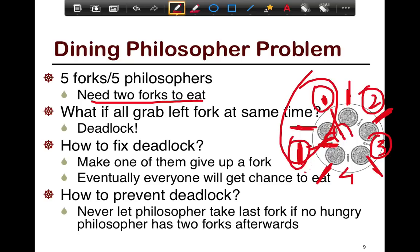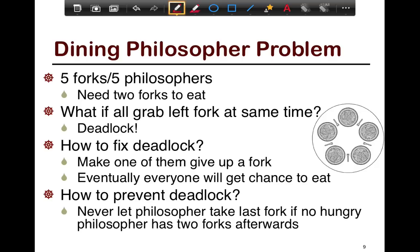Another way of preventing deadlock is to never let a philosopher take the last fork if no hungry philosopher would have two forks afterwards. So as you go along the table, the first through fourth philosophers are allowed to grab their forks, but the fifth — if he grabs his fork, no philosopher will have two forks and the system lands in deadlock. So you detect this and prevent the fifth person from acquiring the fork. This prevents the circular wait from happening.